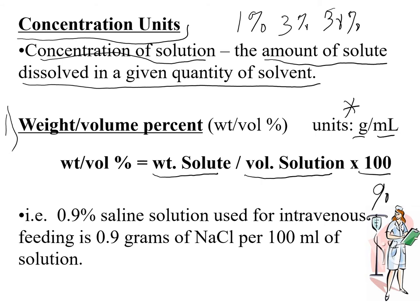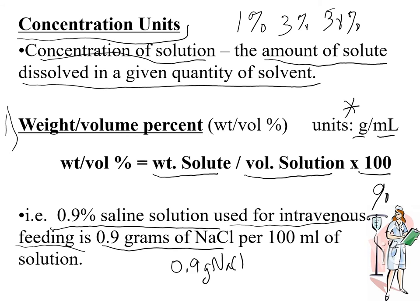For example, a 0.9% saline solution used for intravenous or IV feeding means that 0.9 grams of solute — sodium chloride — is dissolved in water, with a total solution volume of 100 mL. Multiplying by 100, the 100s cancel and you get a 0.9% solution.